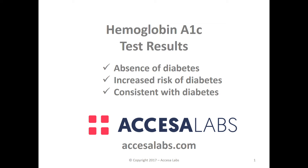Let's review an AccessaLAB sample report to help you learn how to interpret the hemoglobin A1c results. The hemoglobin A1c is used to screen for the presence of diabetes. We will review the three ranges of results, which include an absence of diabetes, an increased risk of diabetes, and consistent with diabetes.